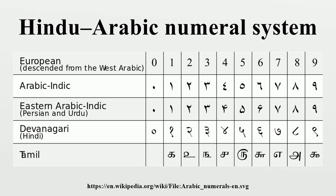The Hindu-Arabic numeral system, or Hindu numeral system, is a positional decimal numeral system, and is the most common system for the symbolic representation of numbers in the world. It was invented between the 1st and 4th centuries by Indian mathematicians. The system was adopted by Persian and Arab mathematicians by the 9th century, and later spread to medieval Europe by the High Middle Ages. The system is based upon ten different glyphs.